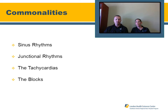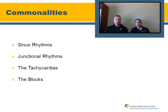Looking at commonalities between ECG rhythms: sinus rhythms must have a P wave in front of them. They're generally between 60 and 100 beats per minute, with a narrow QRS and an appropriate-looking T wave. They could have ST elevation or depression and still be considered a sinus rhythm as long as a P wave is present.